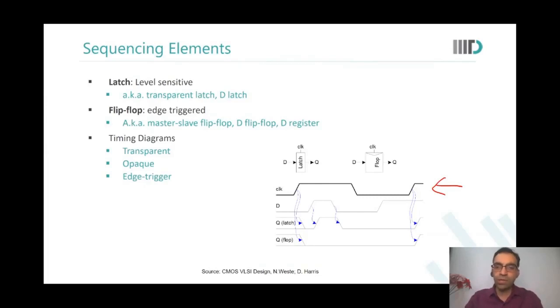Since data toggled when the clock was high, the latch immediately reflected the transition of data onto the output. The flip-flop on the other hand was edge triggered. The rising edge of the clock had already passed, so this toggling of data was not recorded by the flip-flop.